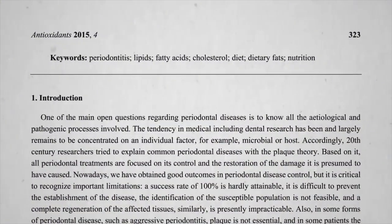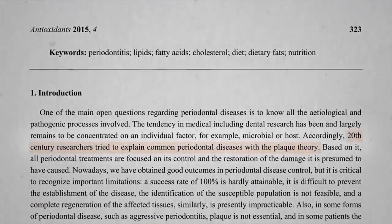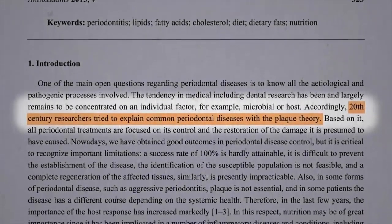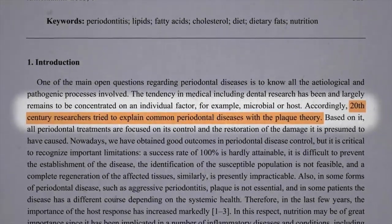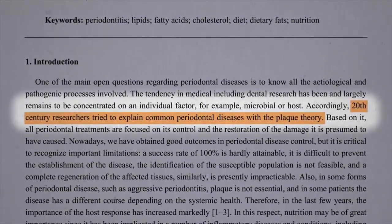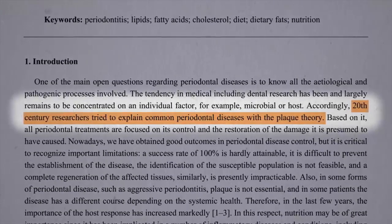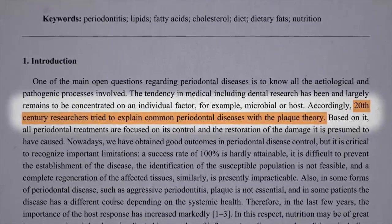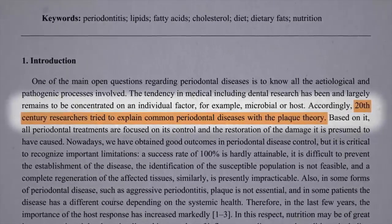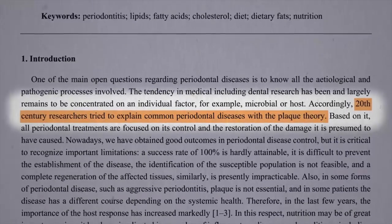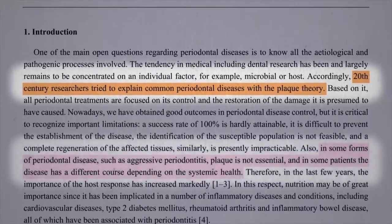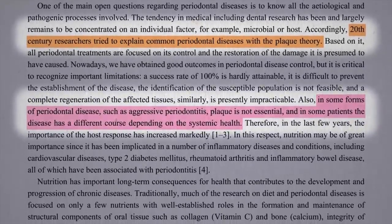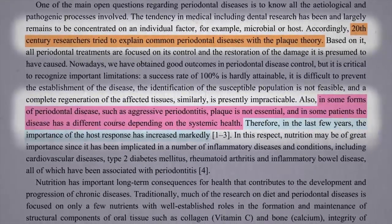The standard explanation of periodontal disease is the plaque theory. The buildup of plaque leads to gingivitis — gum inflammation — which leads to periodontitis, inflammation lowered down beneath the gums. But in some forms of periodontal disease, plaque doesn't appear to play a critical role.